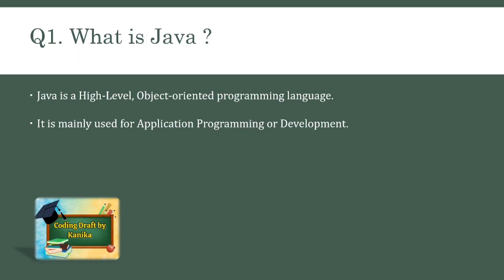Our first question is: what is Java? Java is a high-level, object-oriented programming language and it is mainly used for application programming or development. It was initially called Oak but later renamed Java.